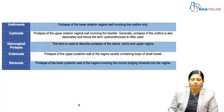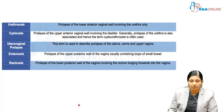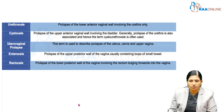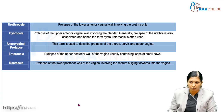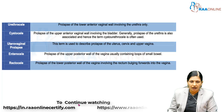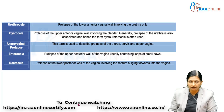A urethrocele is a prolapse of the lower anterior vaginal wall involving the urethra only. A cystocele is prolapse of the upper anterior vaginal wall involving the bladder; since urethral prolapse is often also associated, the term cystourethrocele is frequently used. Uterovaginal prolapse describes prolapse of the uterus, cervix, and upper vagina. An enterocele is prolapse of the upper posterior wall of the vagina containing small loops of bowel. A rectocele is prolapse of the lower posterior part of the vagina, with the rectum bulging forwards into the vagina.